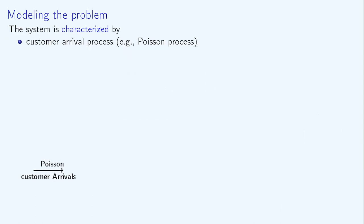The first step of this modeling is to characterize the system. The system has different characteristics. First of all, we have to characterize the arrival process of customers. In other words, the way customers arrive in the system.